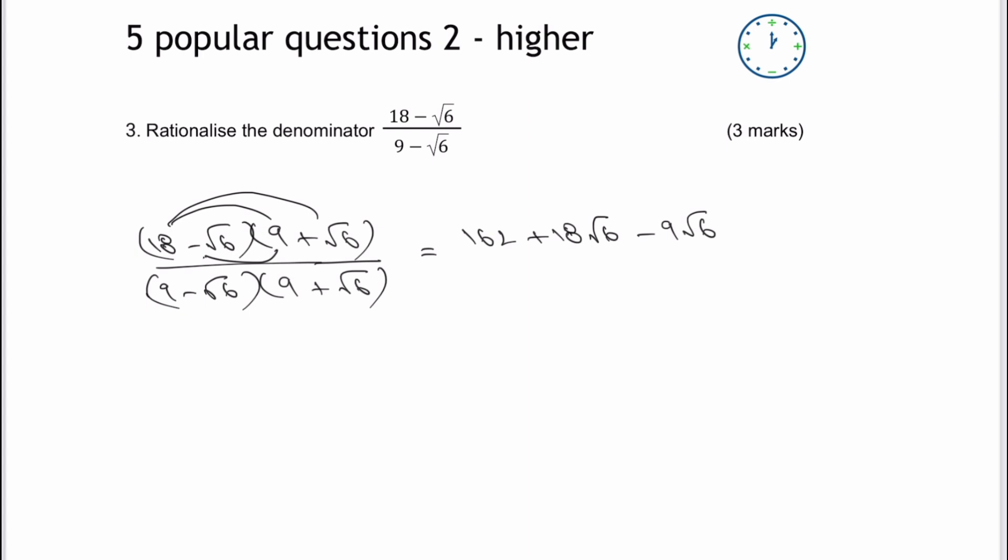And then I've got nine multiplied by minus root six is minus nine root six. And then finally, I've got minus times a plus is going to be a minus. And it's a square root of 36 because six times six is 36. Now, I know that's going to be six. So that deals with the numerator. And by the way, I'm very aware that you might do your multiplication slightly differently to me, but this is the way that I'll do it on this video.